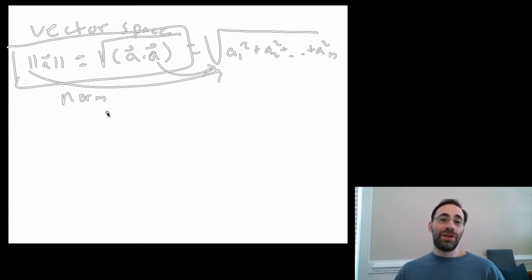We call it this norm. It can be written as the square root of the dot product of a vector with itself. So the dot product is going to give you a1 squared plus a2 squared plus a3 squared.